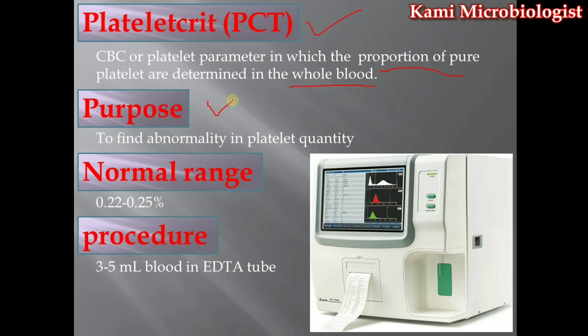The purpose of this test is to check for abnormalities in the platelet amount or platelet quantity. The normal range of PCT is 0.22 to 0.25 percentage.